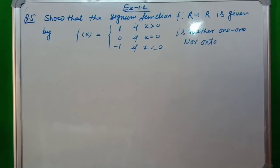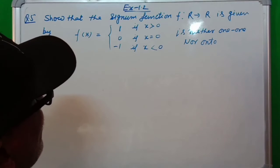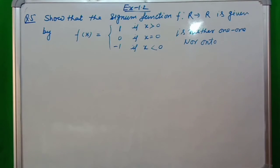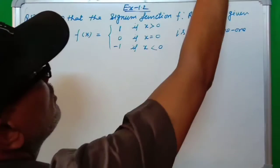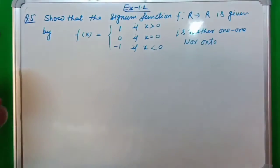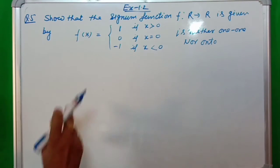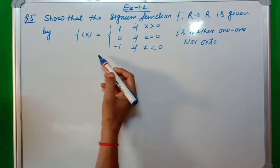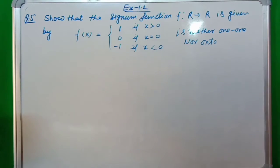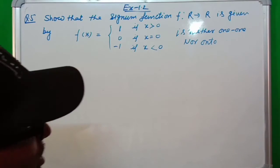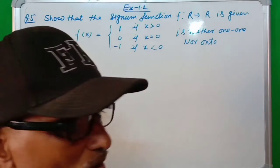So now students, I am starting exercise 1.2 question number 5. Today I will start exercise 1.2 question number 5, the signum function. The signum function f such that R to R is given by... this signum function is neither one-one nor onto.